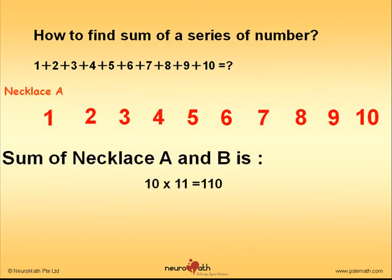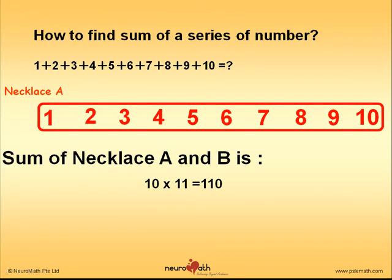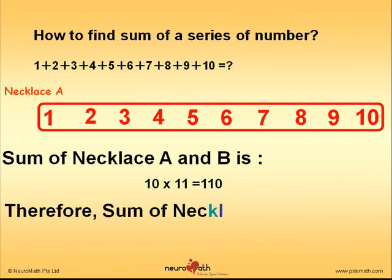Now, remember, our job is to find the sum of a series of numbers, meaning just one necklace. So, since we know that the sum of two necklaces is 110, therefore, the sum of one necklace will be 110 divided by 2 and we get 55.